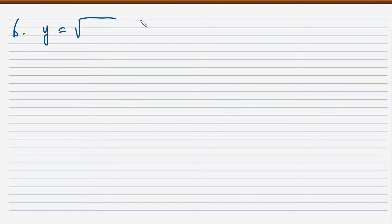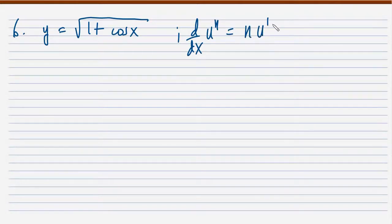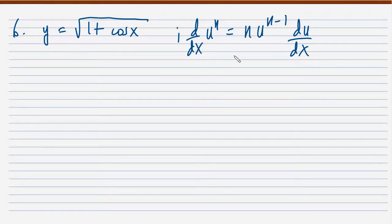Problem number 6. We have y is equal to the square root of 1 plus cosine x. We will not go ahead directly to the derivative of cosine x. The first formula that we will apply here is actually the general power formula, which is the derivative of u raised to n, equal to n times u raised to n minus 1, then the derivative of u with respect to x. Our u is 1 plus cosine x.